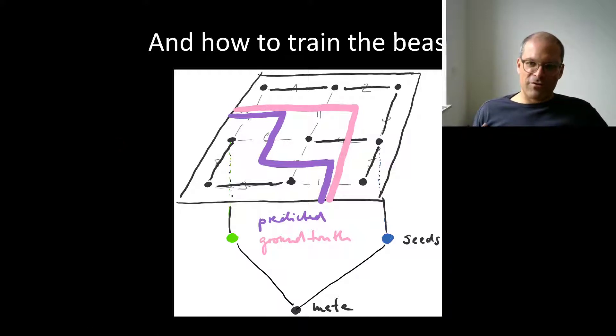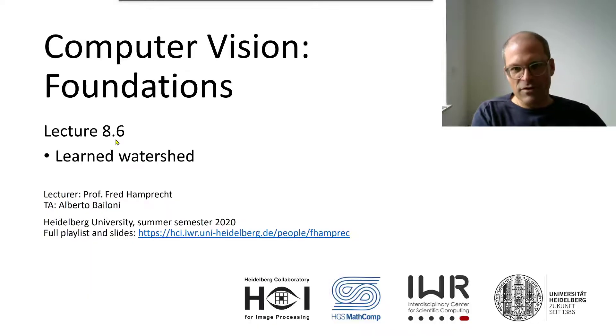Where you don't just train the neural network directly to give you desired edge weights but where you do take the effect of the inference algorithm, in this case a seeded watershed, into account. All right. And this actually works.